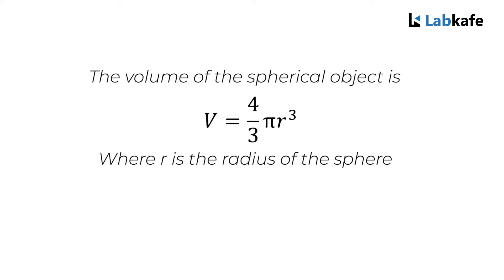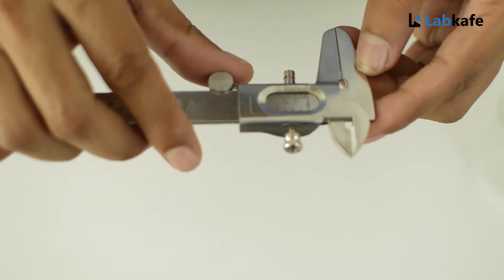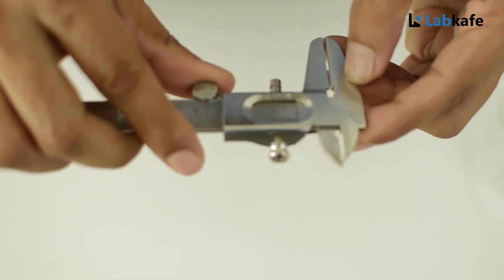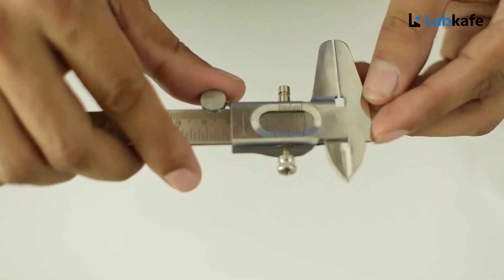The formula we use to calculate the volume of the spherical object is V equals 4/3 π r³, where r is the radius of the sphere. Before we take the reading of the radius of the spherical object, we have to correct if there is any zero error in the instrument.